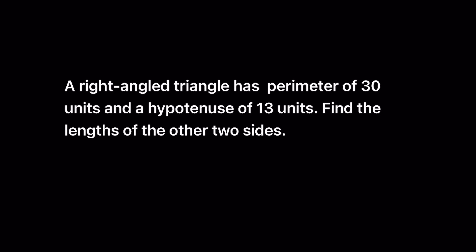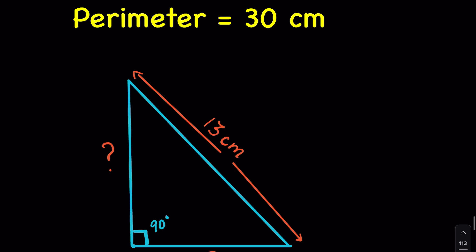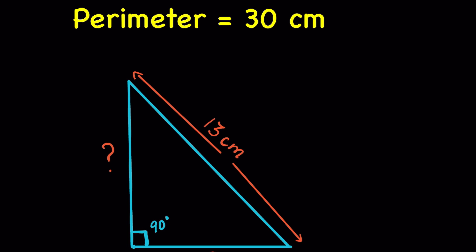A right-angled triangle has a perimeter of 30 units and a hypotenuse of 13 units. Find the lengths of the other two sides. Here is the representation of the question. Remember that this is not true to scale, just for representation.